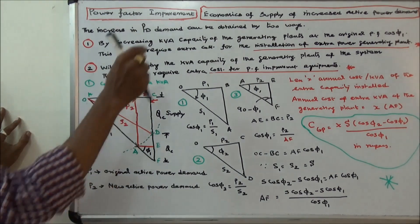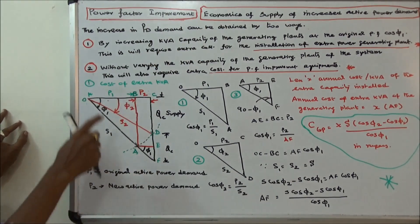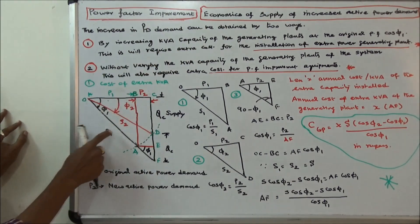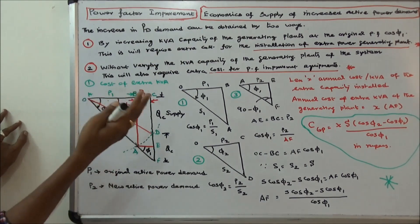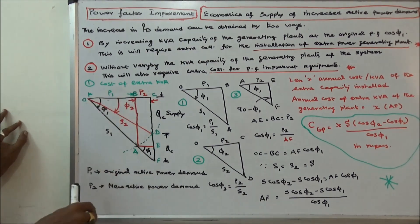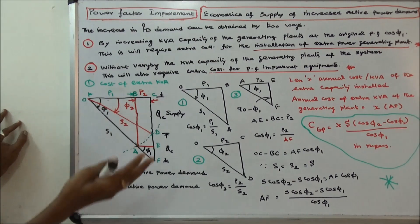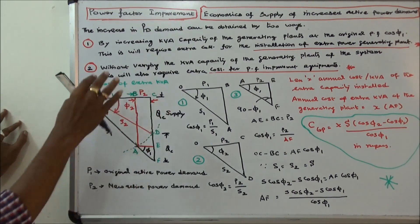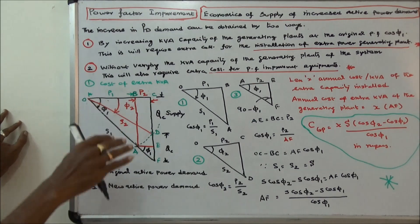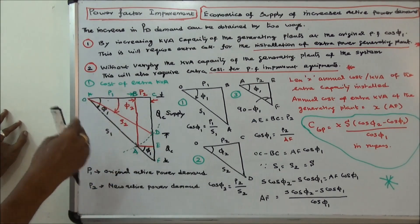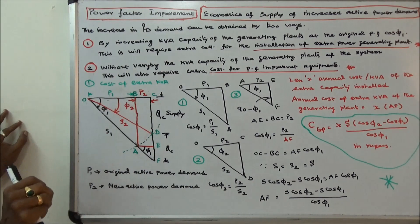That is the first case. In the second case, without varying S1 and S2 — that is, the generating plant capacity — we are installing a static capacitor or synchronous condenser to improve the power factor. Naturally, this also requires extra cost for power factor improvement equipment.